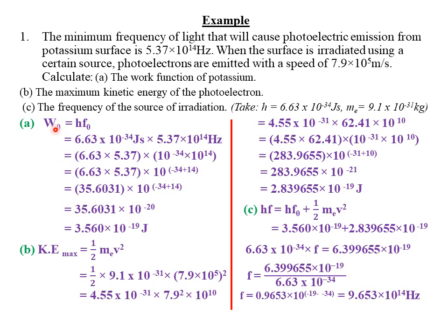The work function is W₀ = hf₀, where f₀ is the threshold frequency and h is Planck's constant = 6.63 × 10⁻³⁴ J·s. The minimum frequency of light that causes photoelectric emission is the threshold frequency, so f₀ = 5.37 × 10¹⁴ Hz.